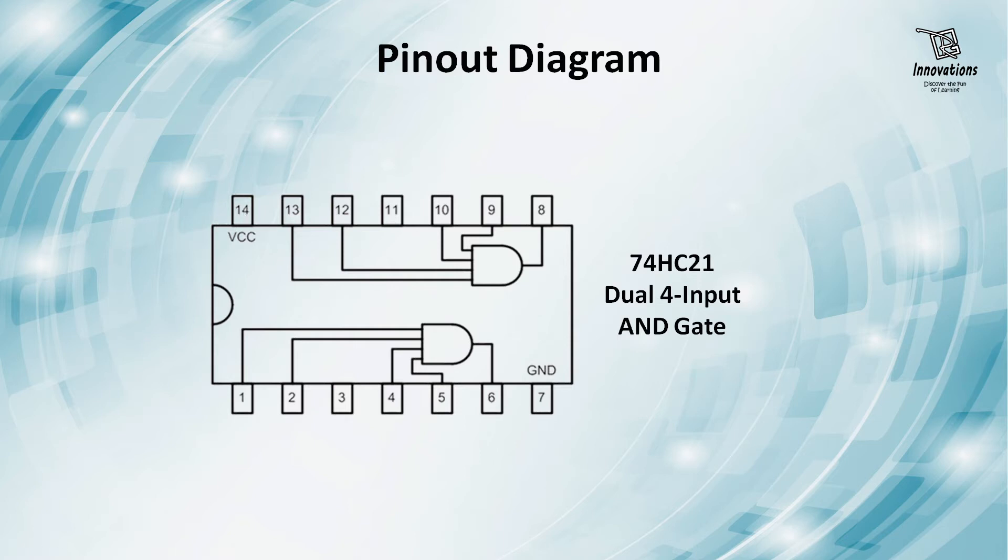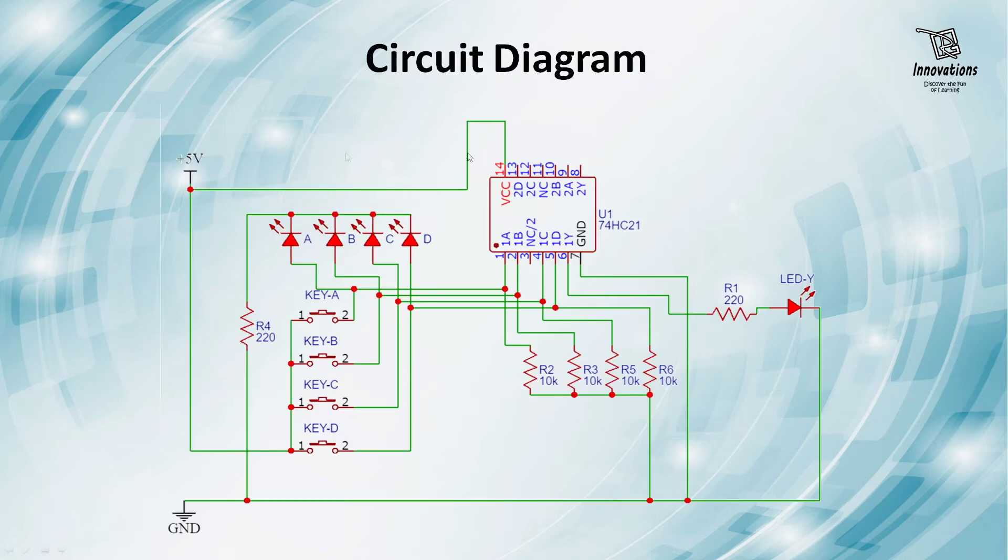Now let's see the circuit diagram we're going to implement. We've used IC 74HC21 and will only demonstrate segment 1, with input pins 1, 2, 4, and 5, and output pin 6. Pin 14 connects to positive power supply and pin 7 to negative. Pins 1, 2, 4, and 5 connect to inputs provided by four switches: A, B, C, and D.